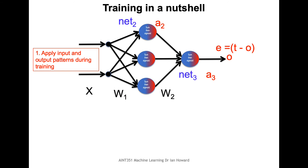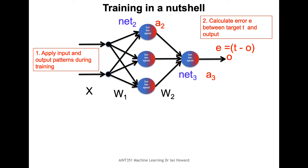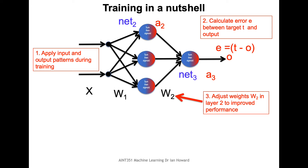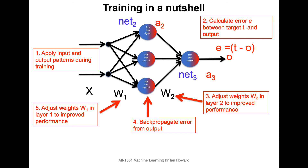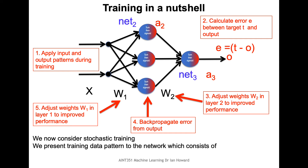Training step by step: first apply the inputs and outputs, propagate forward to get the output, then calculate the error between the target for that pattern and the output. We calculate the error gradient with respect to W2 and update W2. We then back-propagate the error, calculate the error gradient with respect to W1, and update W1. Here we consider stochastic training with a single input vector x and single output target o.